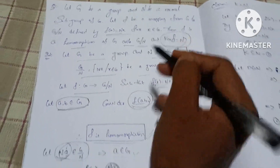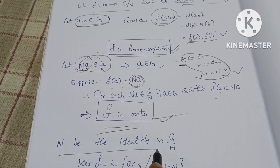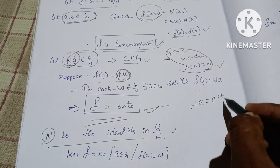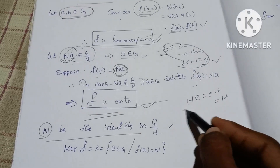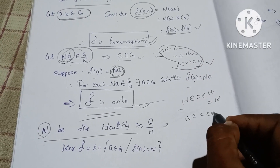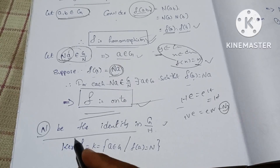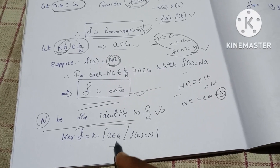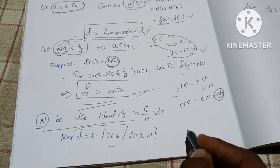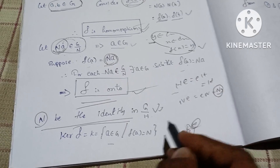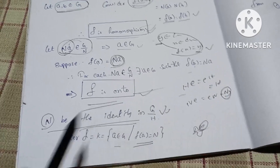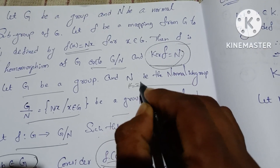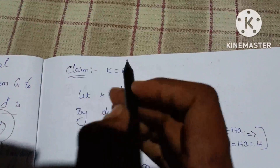Next, we find the kernel of F. Let N be the identity of G/N, which is the coset Ne = N. So the kernel K equals the set of all A in G such that F(A) = N. We claim that K equals N.